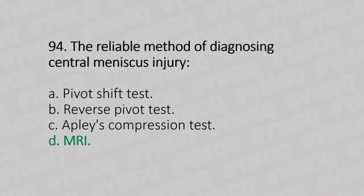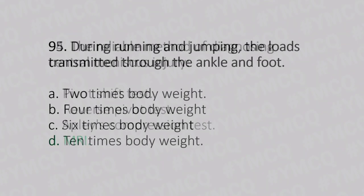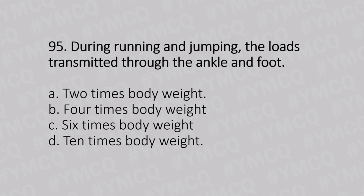Now let's move to question number 95. During running and jumping, the load transmitted through the ankle and foot is. Option A: 2 times body weight. Option B: 4 times the body weight. Option C: 6 times the body weight. Option D: 10 times the body weight. And the answer is Option D, 10 times the body weight.